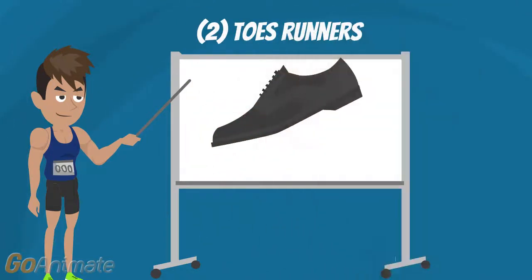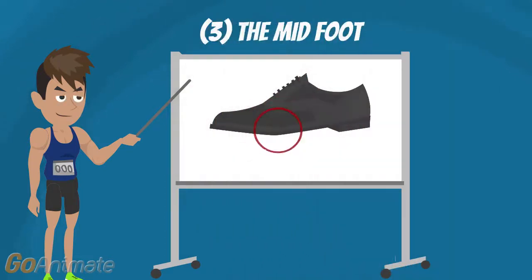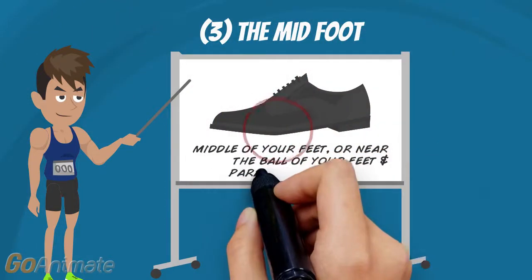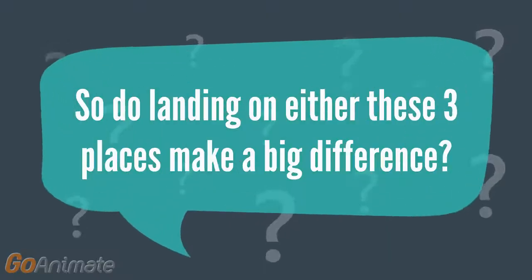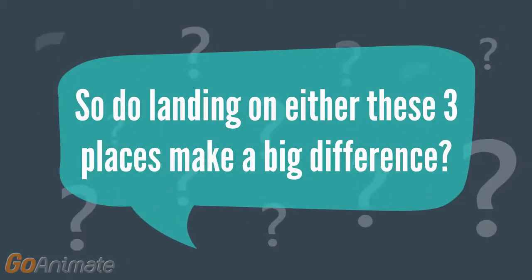Second position is a toe runner. Lots of sprinters will claim that they run on their toes. Third position, the midfoot, is when you try to land more in the middle of your feet or near the ball of your feet. Many professional runners emphasize having their feet land parallel to the ground.